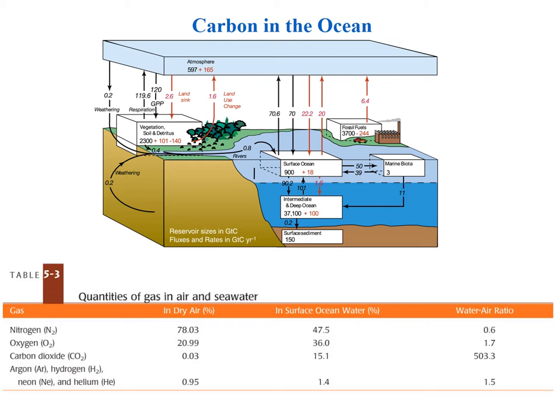This is a figure from the IPCC report from a couple of years ago. The numbers in the boxes are basically the amount of carbon in that reservoir, in gigatons of carbon. The atmosphere has almost 600 gigatons of carbon, and naturally we've added almost 200 gigatons of carbon by burning fossil fuels.